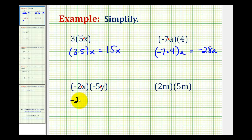So we'll have negative 2 times negative 5, let's group those two, times x times y. Well negative 2 times negative 5 is positive 10, and x times y is just equal to xy, and 10 times xy is equal to 10xy.